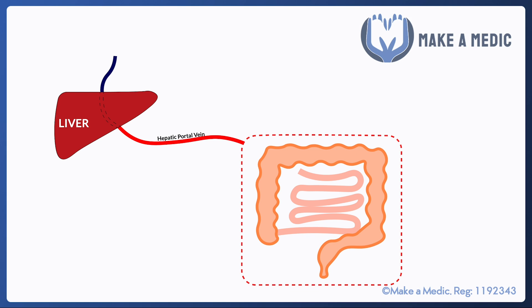We have our gastrointestinal tract within the red box here, and that is drained via the hepatic portal vein into the liver. The liver is the first organ met by quite a lot of the substances that we ingest. It'll travel via the hepatic portal vein to the liver, which detoxifies the blood and returns the cleaned blood into the systemic circulation.